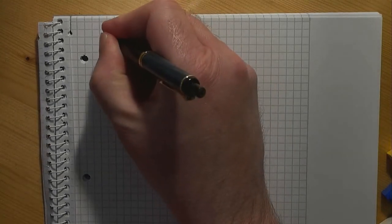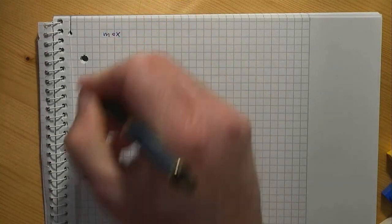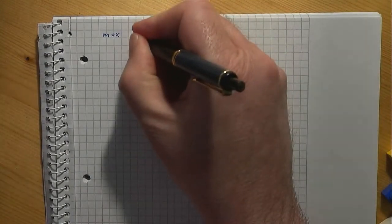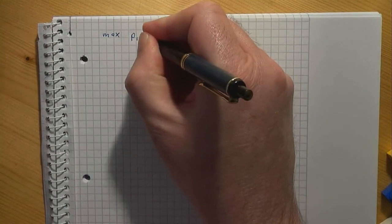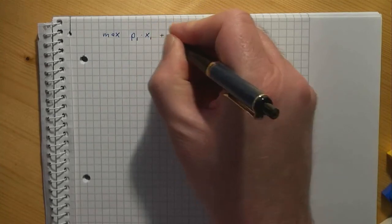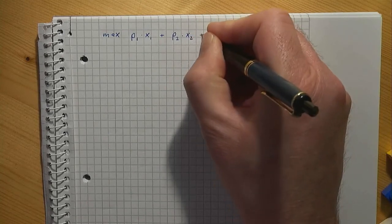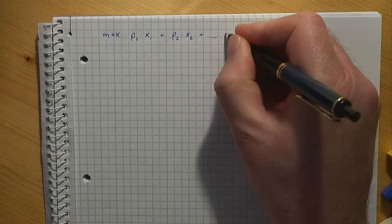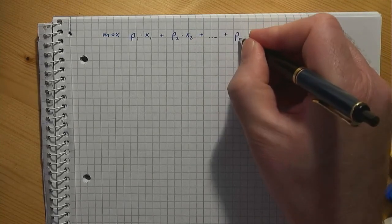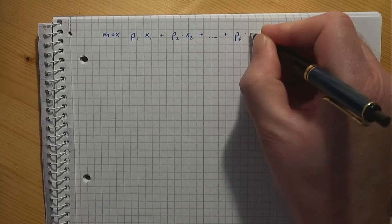Let f be the number of types of furniture and p1, p2 and so on be the price for a particular type of furniture. In its general form the objective function looks like this. P1 times x1 plus p2 times x2 plus and so on until pf times xf.